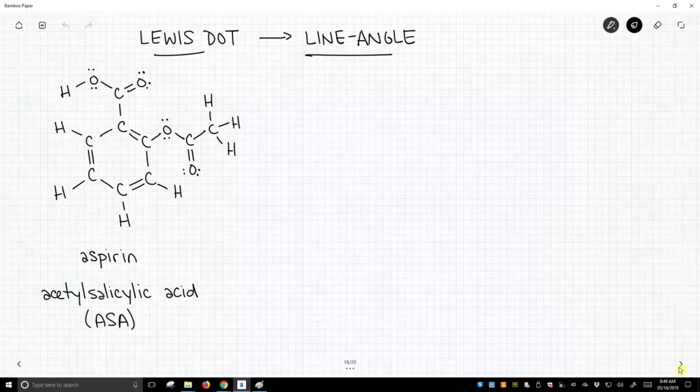So one of the big features on our Lewis structure is this ring, and let's number our atoms. Always a good idea to number your atoms. We'll just number the carbons. So six, there's seven, carbon seven, and then eight and nine.